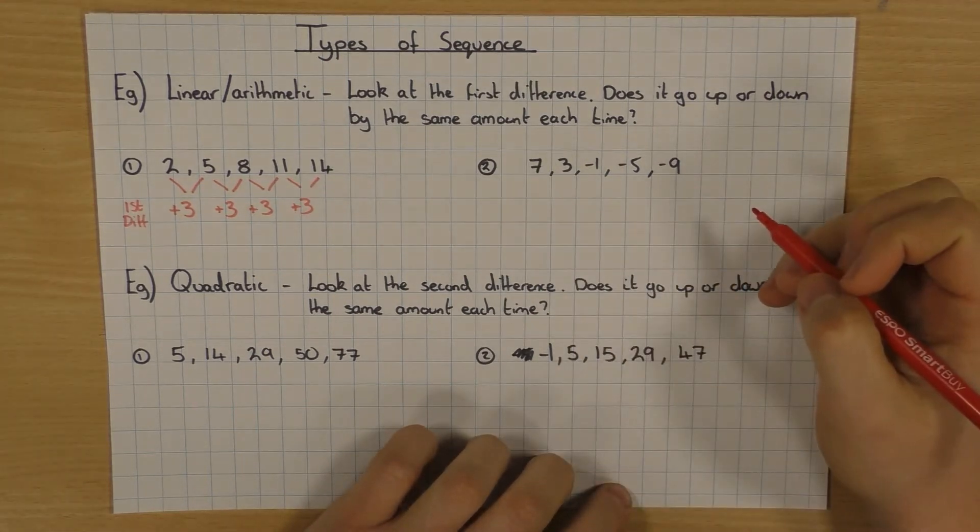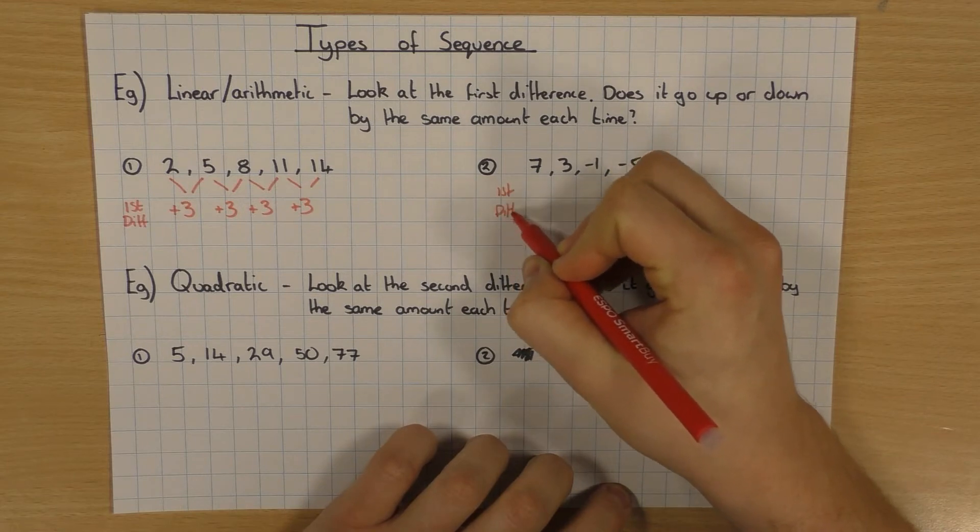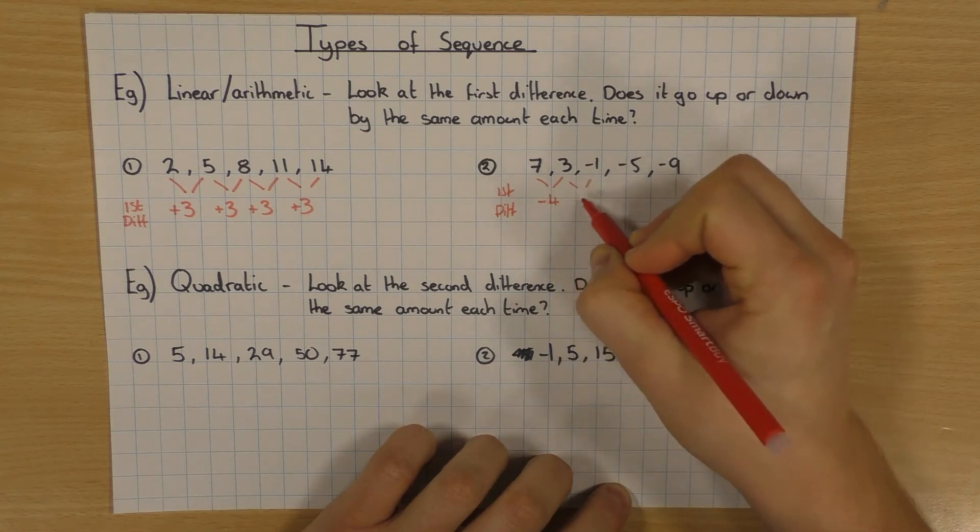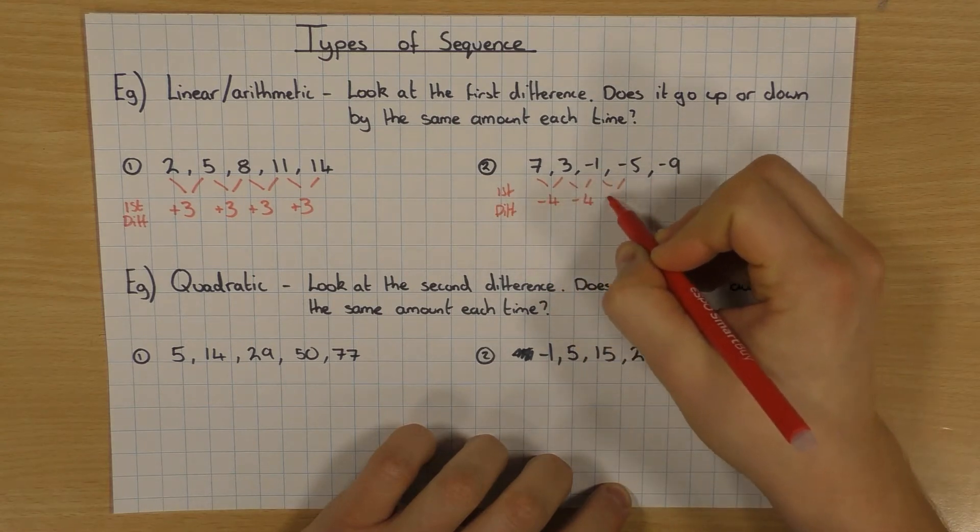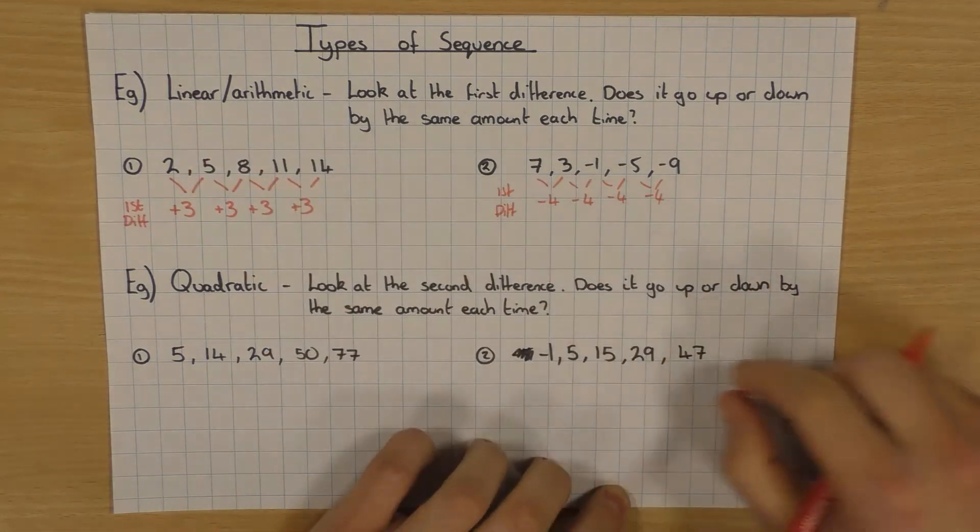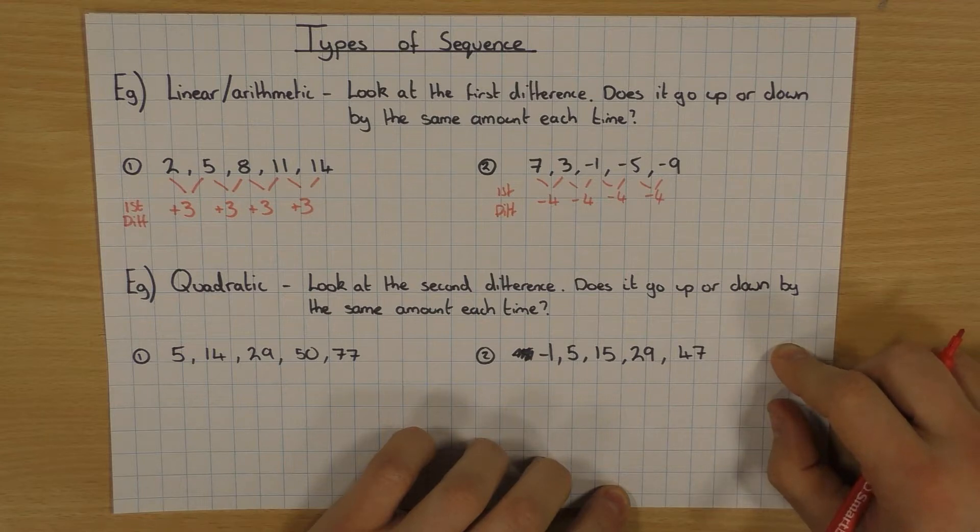It's the same thing here. If you didn't know what type of sequence it was, have a look at the first difference. It would always be my starting point. So what is the difference here? Minus 4. Minus 4. And it keeps going. So again, that's your clue that it's a linear or arithmetic sequence. It goes up or down by the same amount every single time.